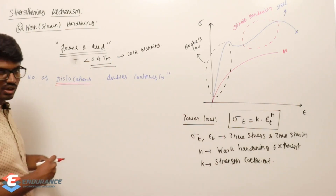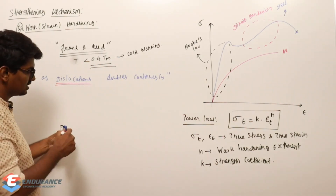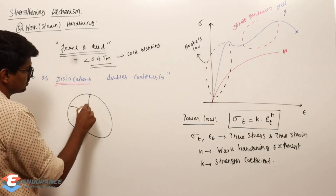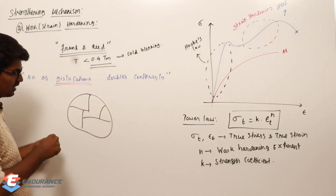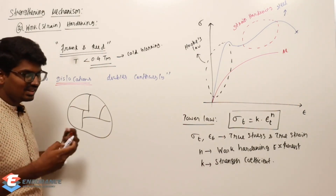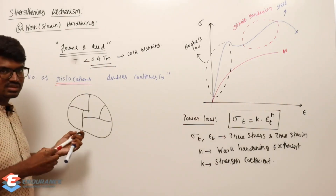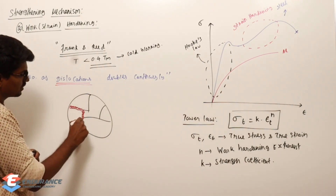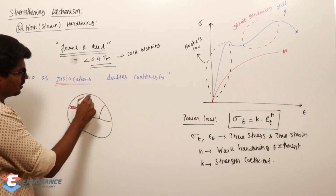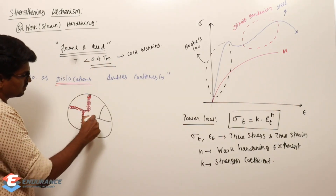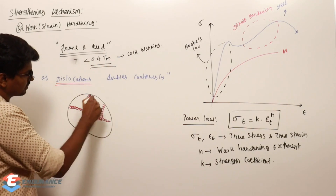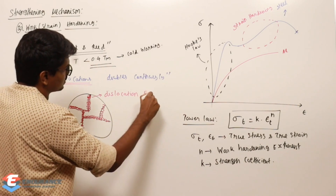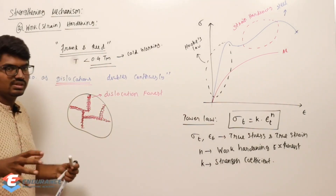As the number of dislocations increases, more and more dislocations are generated. Taking the grain boundaries into consideration, these dislocations move and pile up near the grain boundaries. This pile-up is called a dislocation forest.